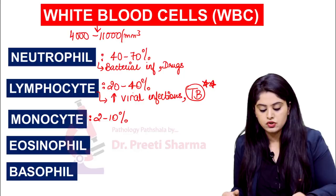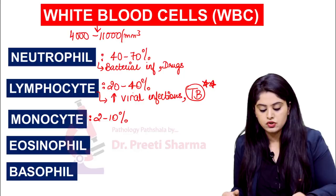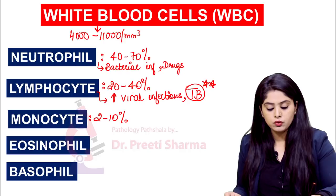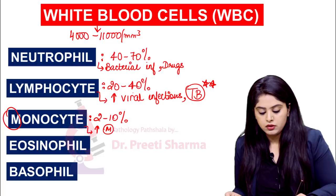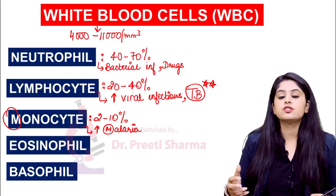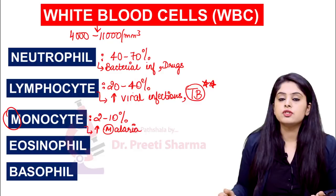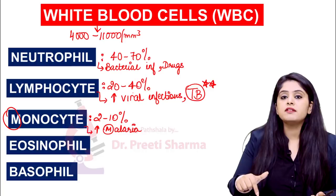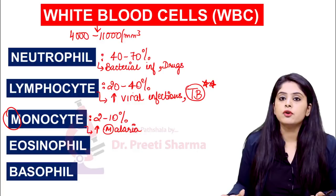Next, we have monocytes. The normal monocyte percentage is 2 to 10 percent. Monocytes are cells of chronic inflammation. One condition you need to know — M for monocyte and M for malaria. Monocyte count will be increased when a patient is suffering from malaria. So if the clinician sends a sample clinically suspecting malaria, as soon as the monocyte count is elevated on the counter, it should immediately come to mind to look for a malaria parasite in the peripheral smear.